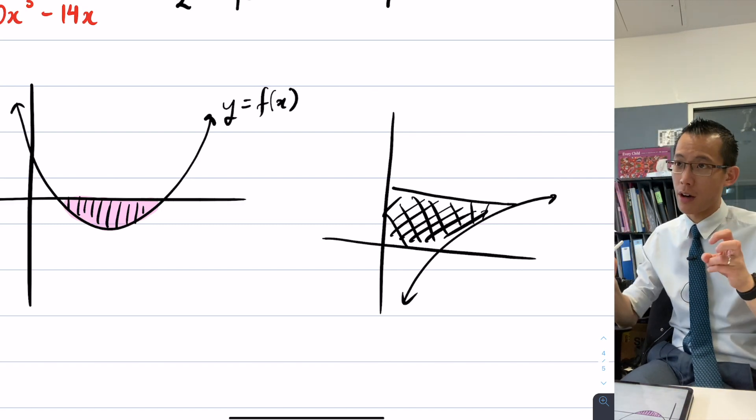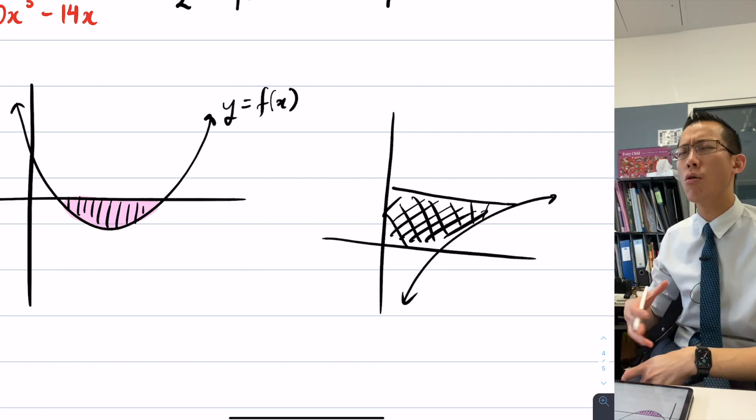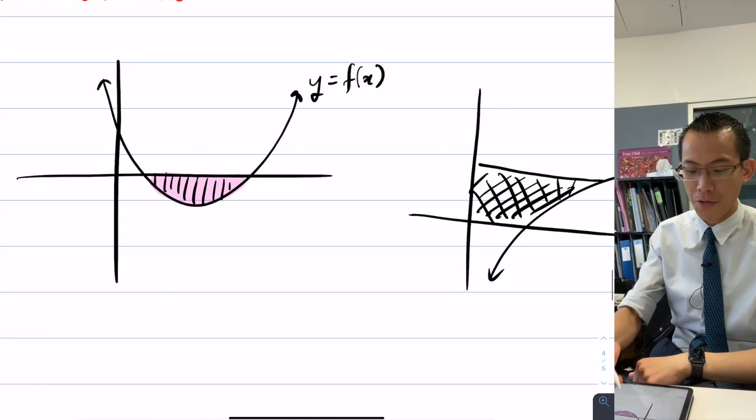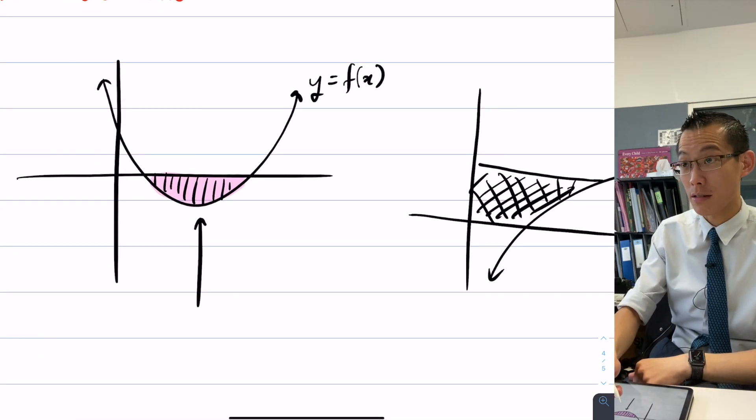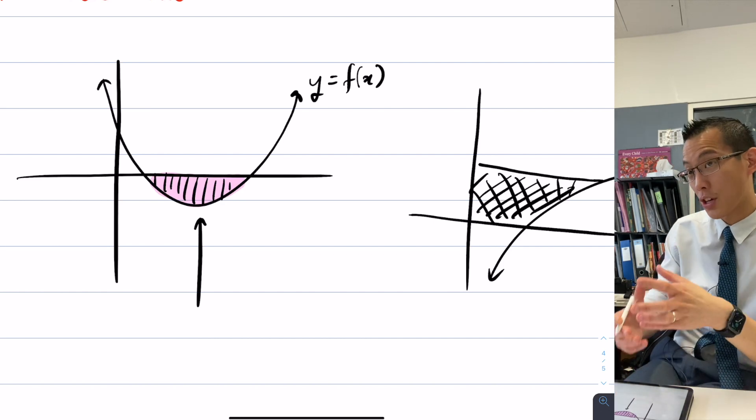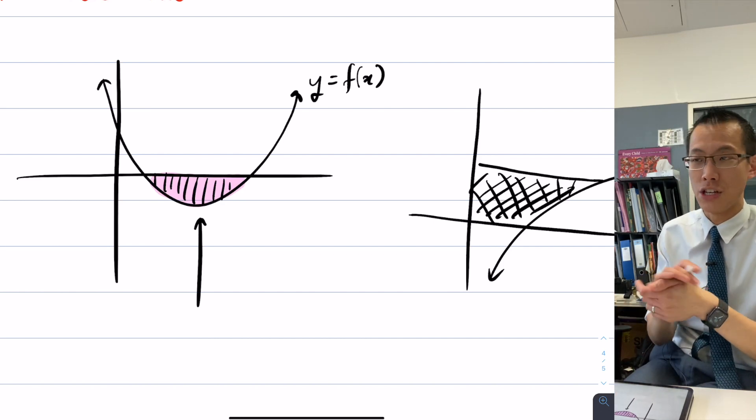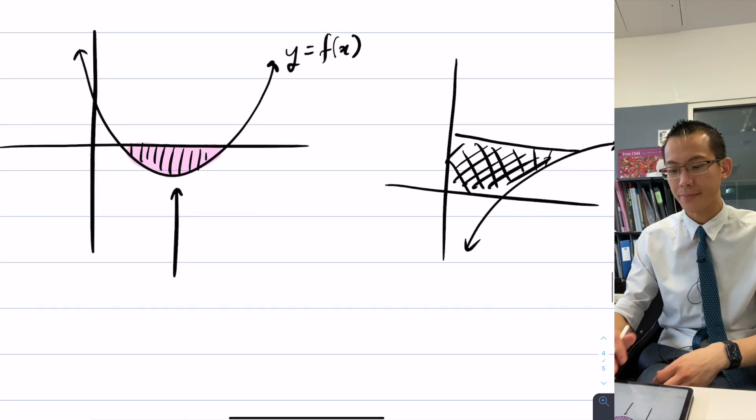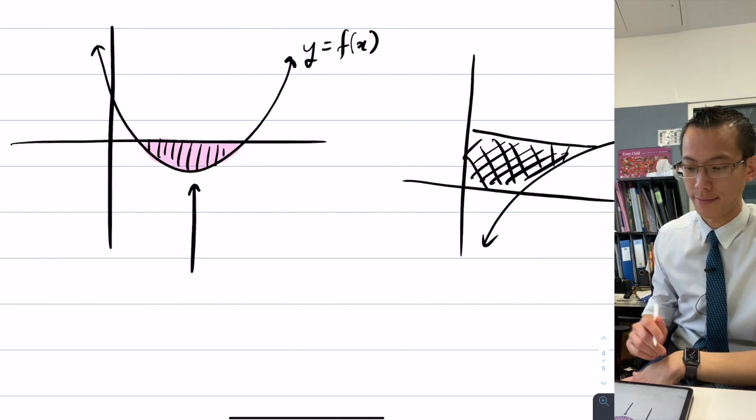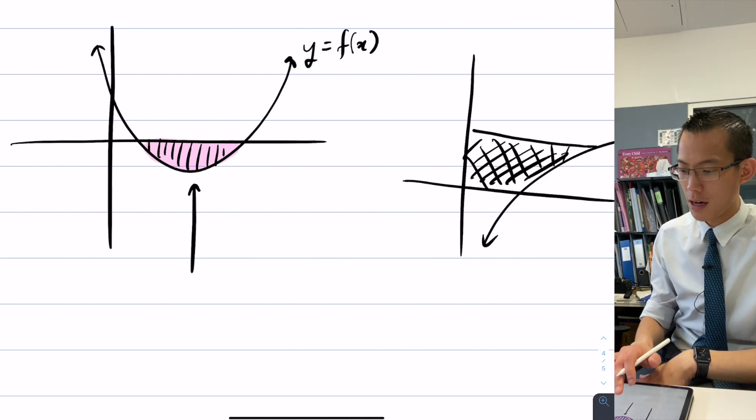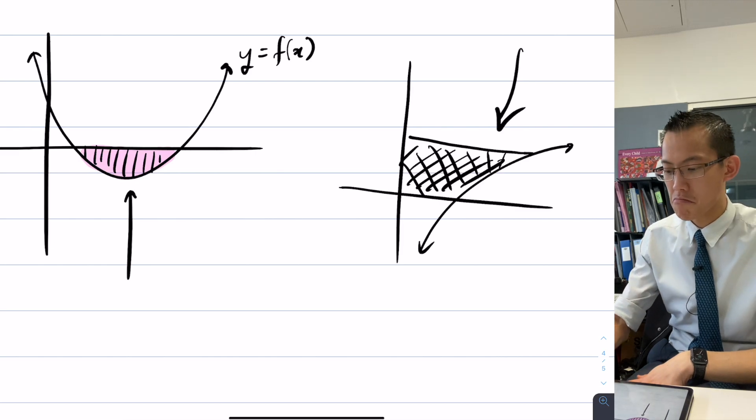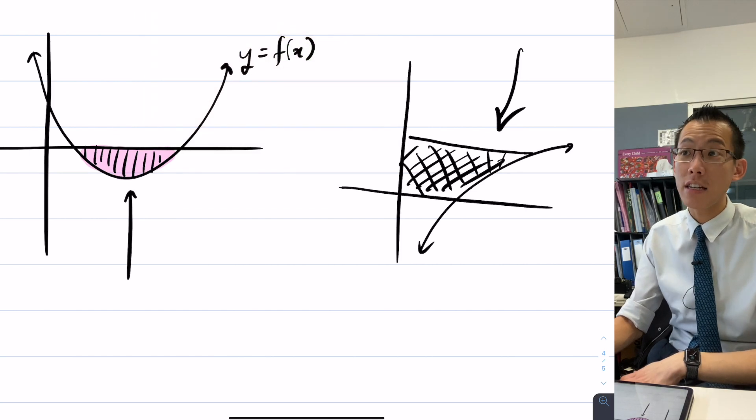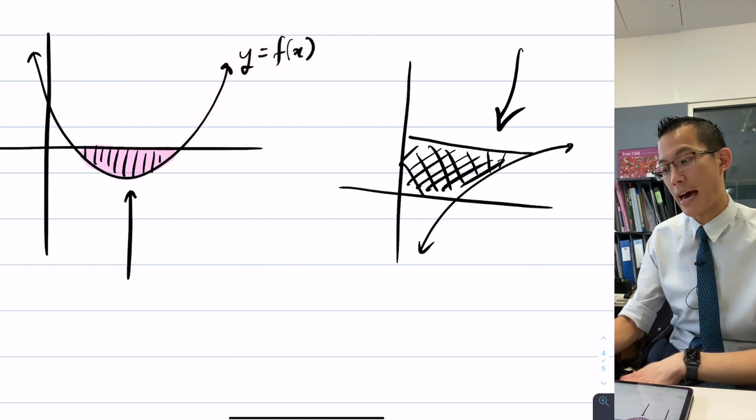So area under a curve, the reason why we say that is because the most frequent kind of area that we get is an area underneath the curve. But the technical way to say this is, it's the area bounded between the curve and the x-axis. You even have to say x-axis because, as we saw in this example, it could be the y-axis. And the way you do that is just draw a rectangle, and then minus the theoretical value of that rectangle with the known curve which you just made up.